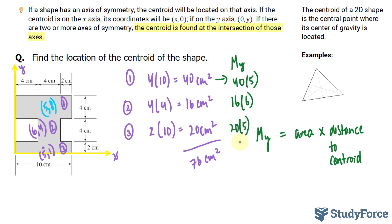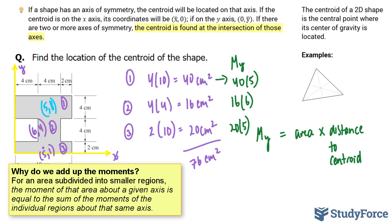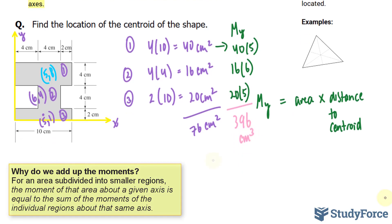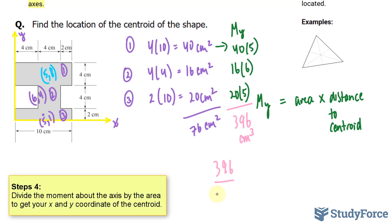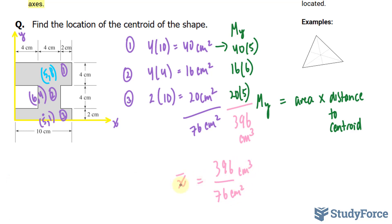We'll add these up and divide by the total area. So adding these up, we end up with 396 centimeters cubed. And if we take this number, 396, and divide it by the area of 76 centimeters squared, remember this is centimeters cubed, we end up with the x-coordinate of the centroid. So this cancels out, leaving us with 5.21 centimeters.